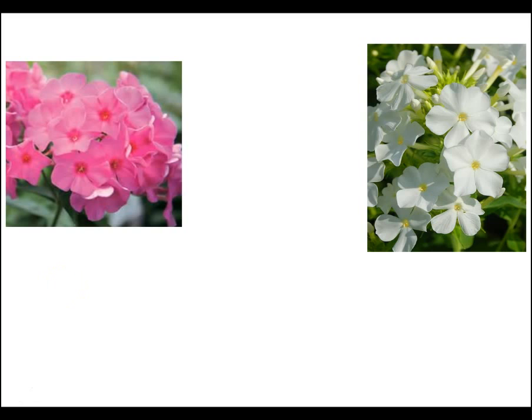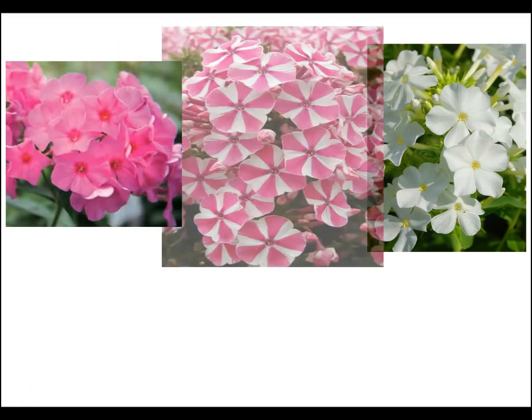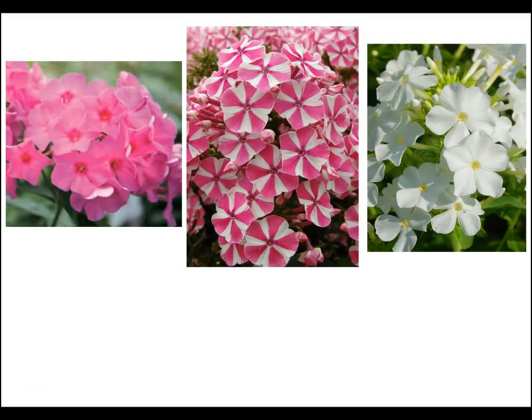This is a type of flower. You can see it's pink on the left and white on the right. A heterozygous individual is not a pinkish-whitish blend — it is both pink and it is white. This flower is called the Phlox Peppermint Twist. It's a very nice looking flower.